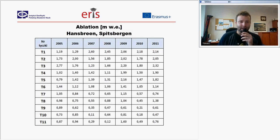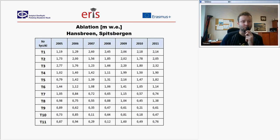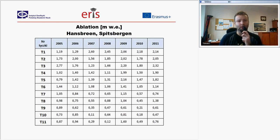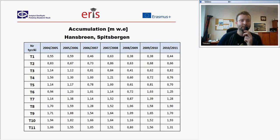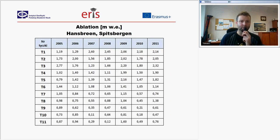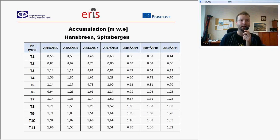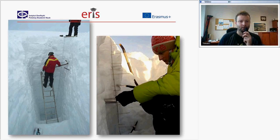For example, from Hansbreen — the glacier located nearby the Polish Polar Station in Spitsbergen — we get information from different ablation stakes. The stakes are named from T1 to T11, and in different years there is information about the water equivalent from these different stakes. This includes information from springtime when accumulation is highest: how much water melted away during ablation and how much water was accumulated during winter. That is something done by glaciologists, who deal with mass balance of glaciers and water accumulation in snow cover.